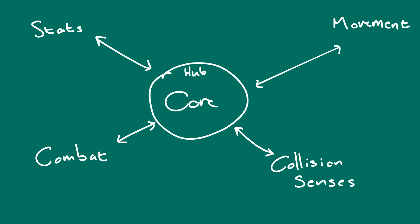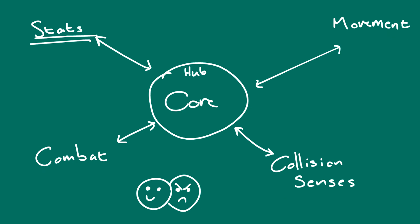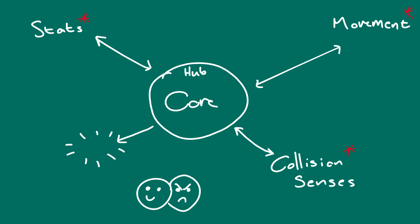Currently our core gives the entities, such as our player or enemies, access to the following core components: movement, collision senses, combat, and stats. As it stands, these components are somewhat required by every entity. Even if an entity were to not make use of, say, the combat core component, the core still knows about it.